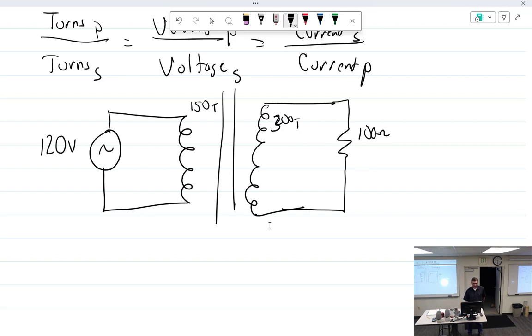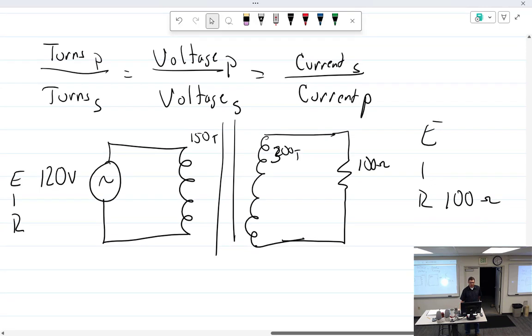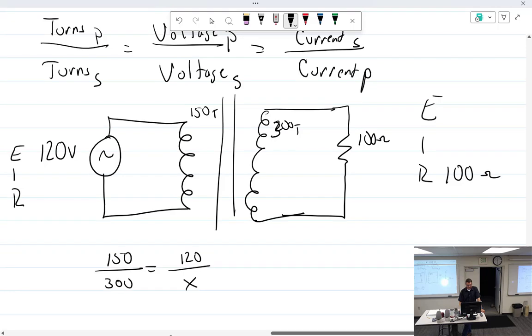Basically we could do something like this. There's the formula right there. So turns in the primary is 150, and turns in the secondary is 300, equals voltage of the primary which is 120 volts. Now we can find x. What's my voltage of the secondary? 240 volts.